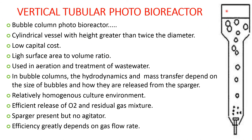The bubble column photobioreactor: this is a cylindrical vessel with height greater than twice the diameter, low capital cost, and a high surface area to volume ratio. It is used in aeration and treatment of wastewater. In the bubble column, hydrodynamics and mass transfer depend on the size of the bubbles and how they are released from the sparger. A relatively homogeneous culture environment is observed. Efficient release of oxygen and residual gas mixture is seen. A sparger is present but no mechanical agitation is introduced. Efficiency greatly depends on the gas flow rate.